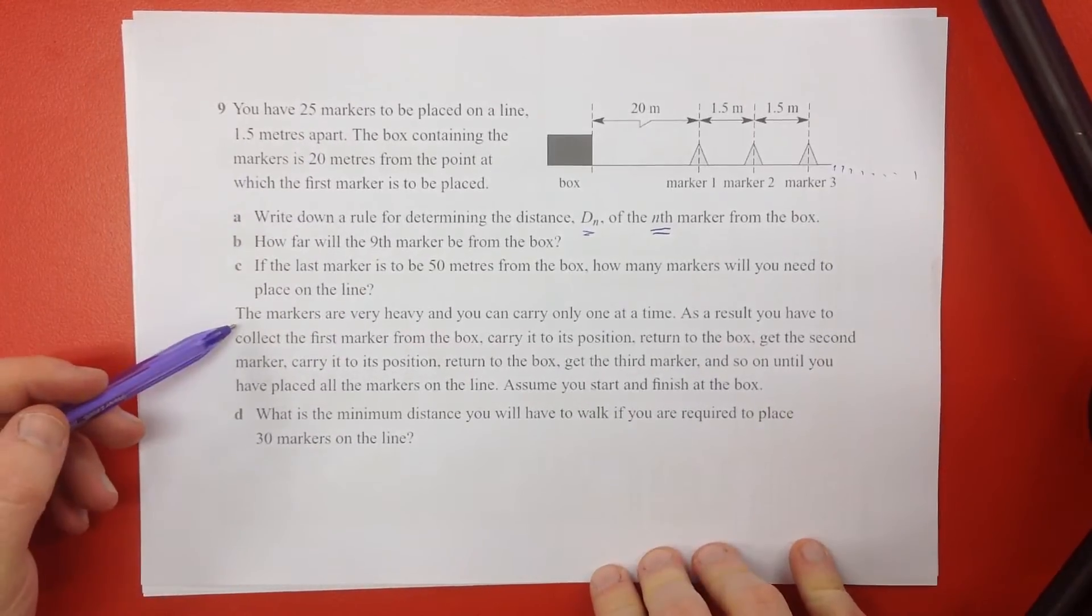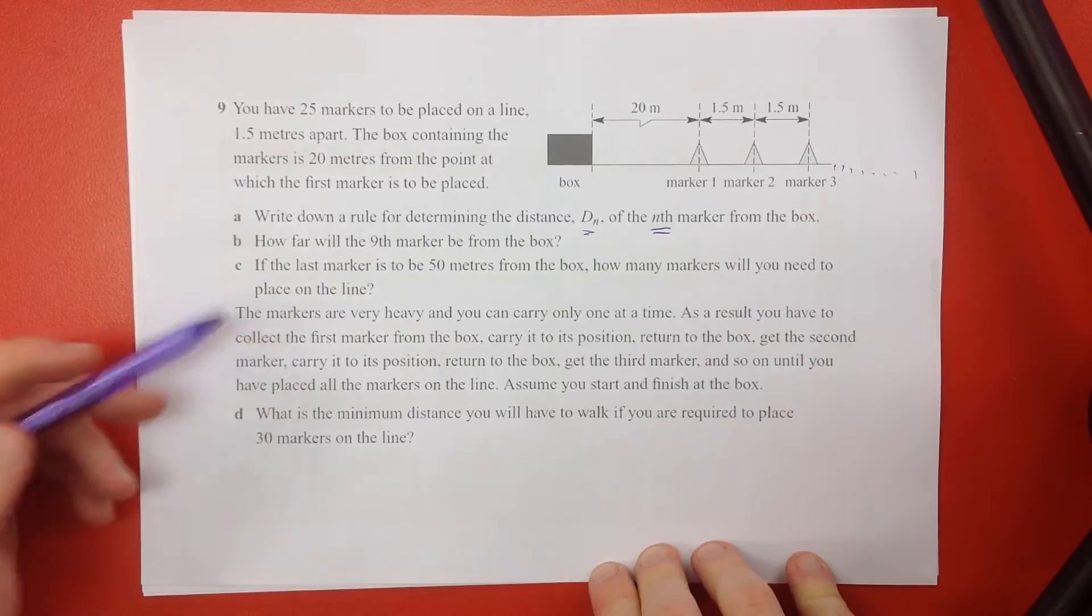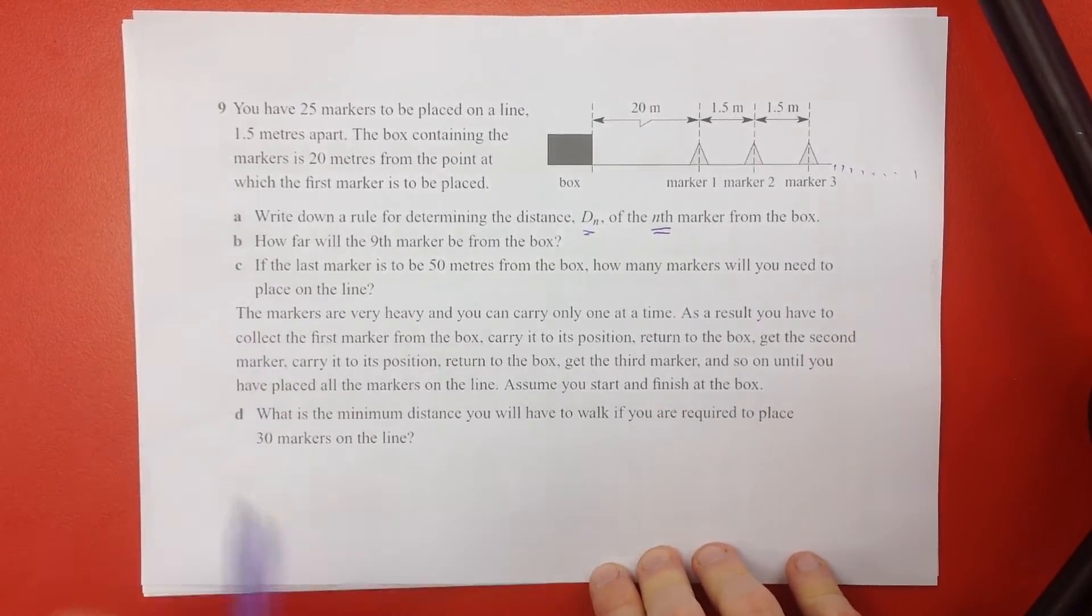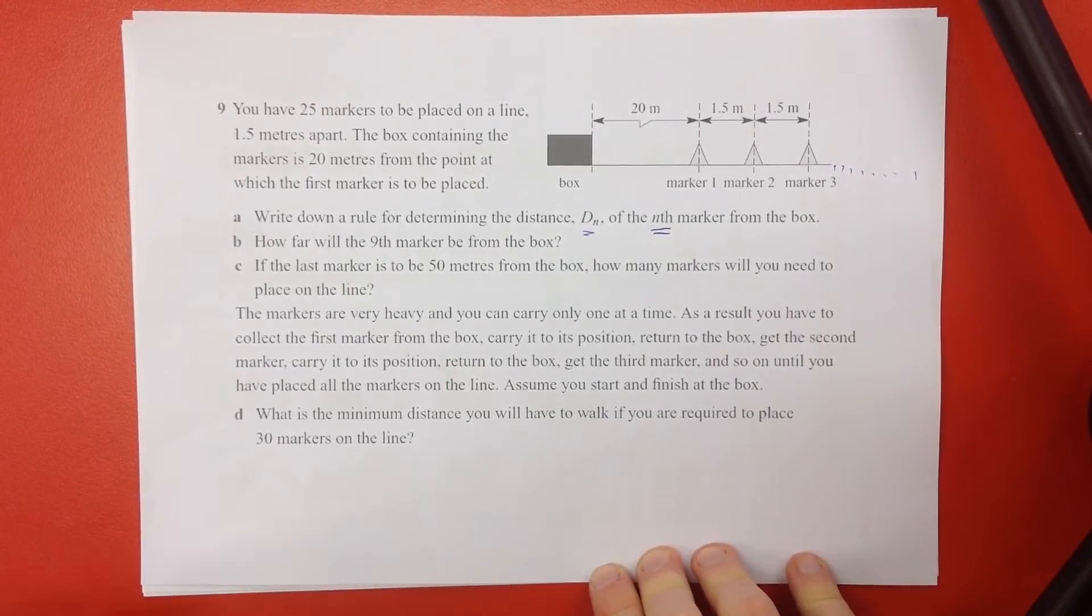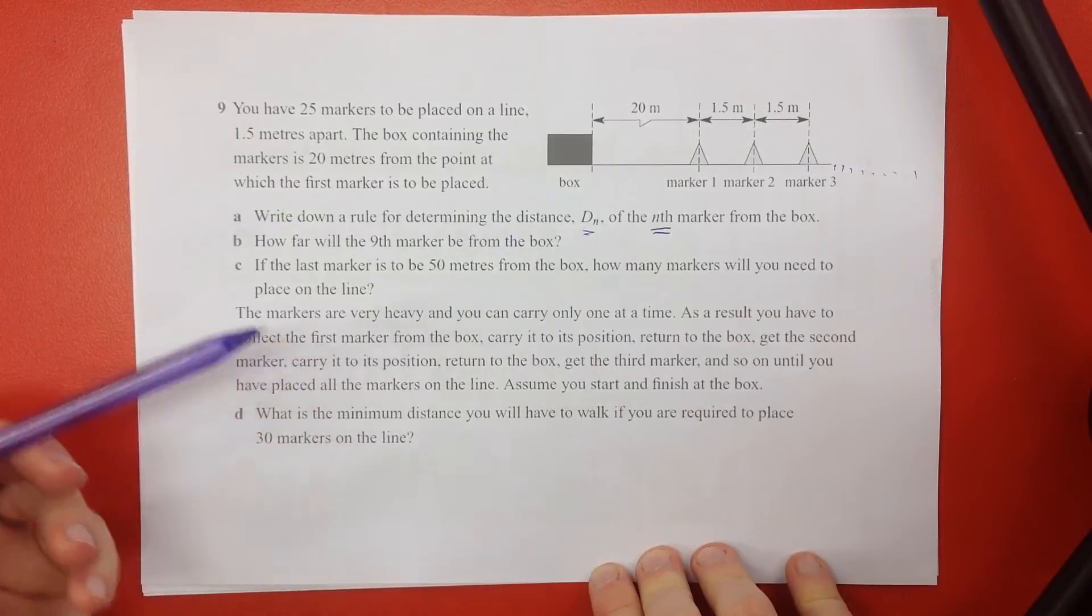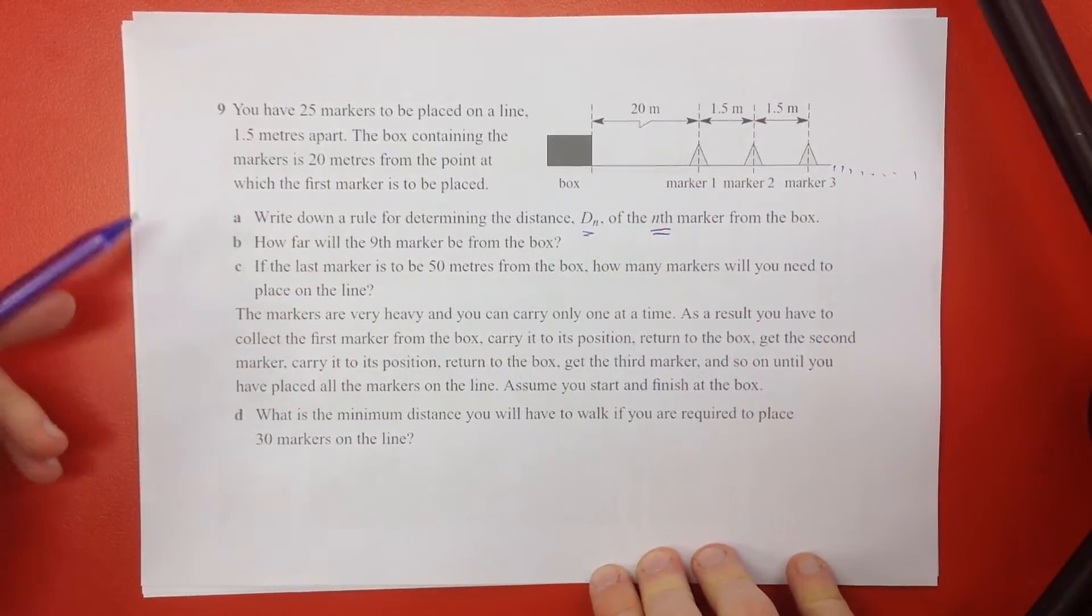This is where it gets a little bit more complicated but not really. The markers are really heavy and you can only carry one at a time. So as a result you have to collect the first marker from the box, carry it to its position, return it to the box, get the second one, carry it to its position, return it to the box, get the third one, carry it to its position, return it to the box, and so on until you put all the markers on the line.